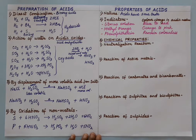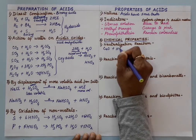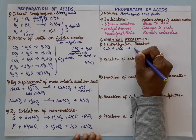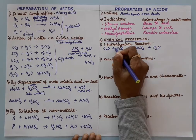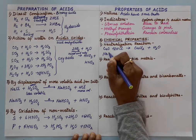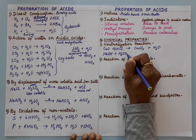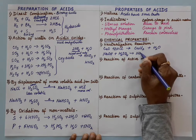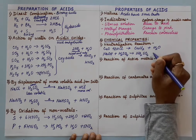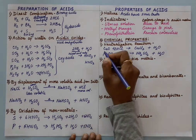Now the chemical properties of acids. The first property is neutralization reaction. When an acid reacts with a base, it will form salt plus water. Any acid reacts with any base — whether HCl, H₂SO₄, or HNO₃ — it will always give the corresponding salt plus water.